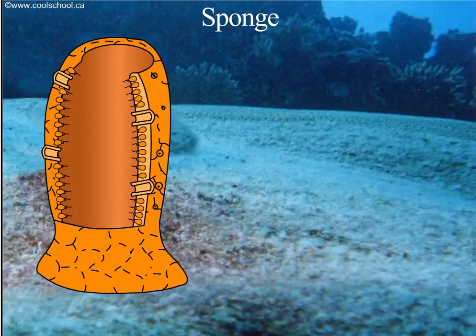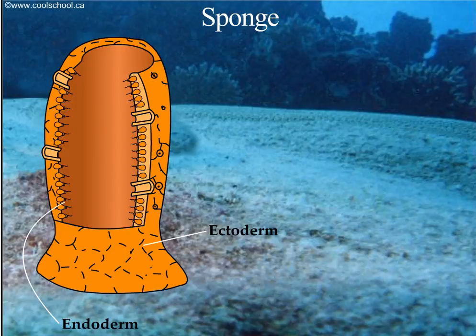Sponges have two layers. The outside layer is called the ectoderm. The inside layer, made up of collar cells, is called the endoderm.